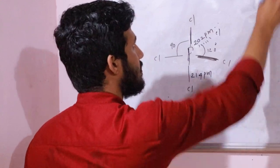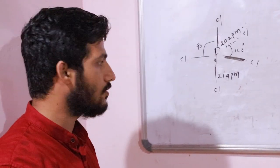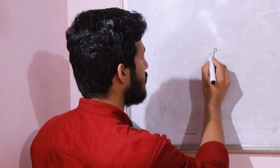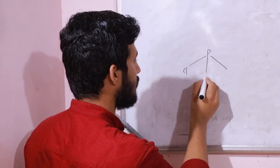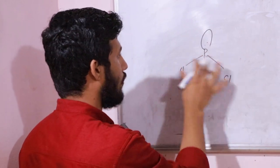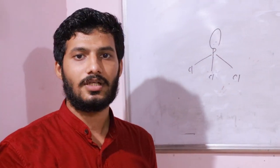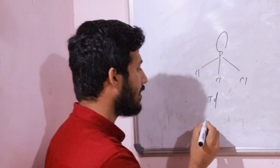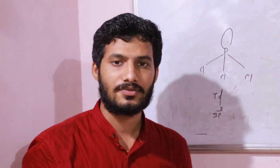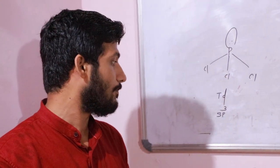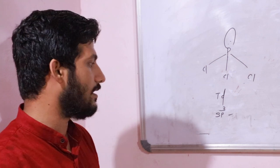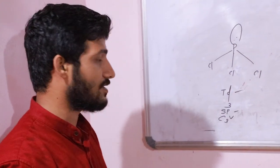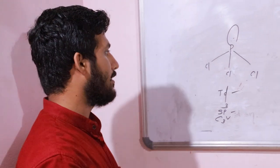In the case of the phosphorus trichloride molecule, there is one lone pair of electrons and three bond pairs of electrons. So this geometry is tetrahedral with sp3 hybridization. This molecule belongs to the C3v point group.